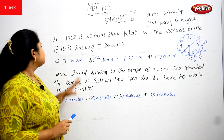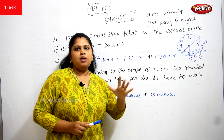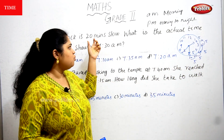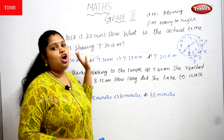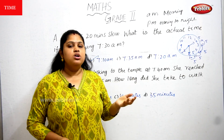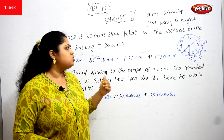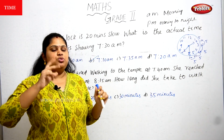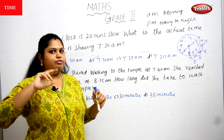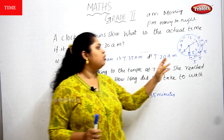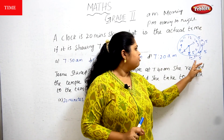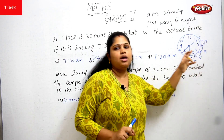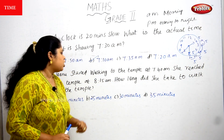One more time: the clock is showing 7:30 AM, but the clock is 20 minutes slow. So you have to rewind the big needle back by 20 minutes — moving from 6 back to 5, 10, 15, 20. Now the time is 7:10.